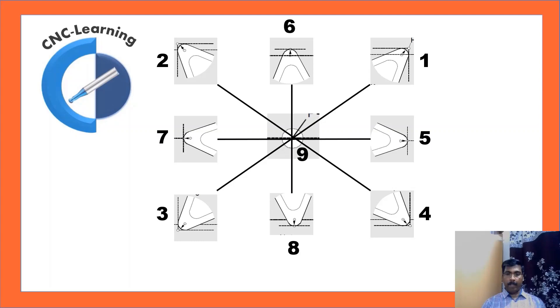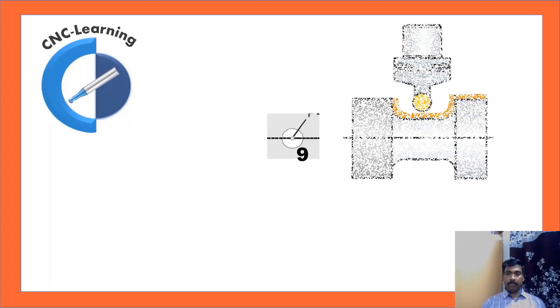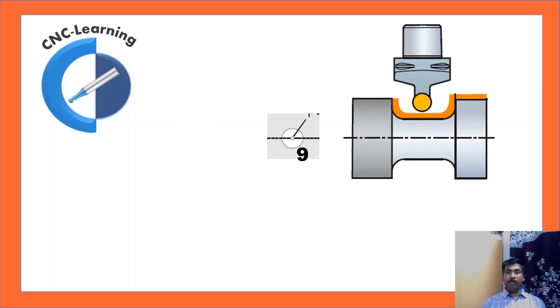Tool type 9 will be a round tool with offset defined in the center of the tool. This can be on any operation. It can be on OD, face, ID, back side, anywhere. When you define the offset at the center of the insert, then it becomes tool type 9.